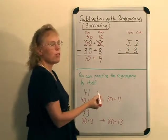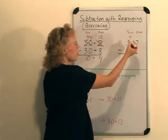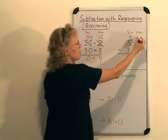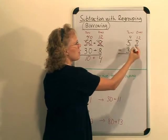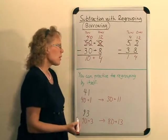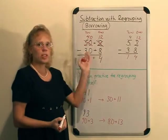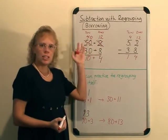12 take away 8 and 40 take away 30, so the answer will be 14. Normally, of course, you know how it is done. We borrow from the tens and leave 4 tens here, and here we have 12. 12 minus 8 is 4, and 4 minus 3 is 1.